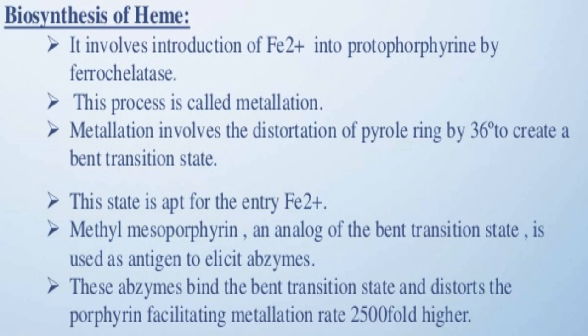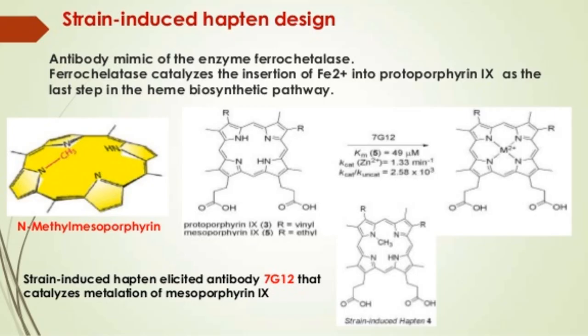Biosynthesis of heme involves the introduction of a ferric ion into protoporphyrin by ferrochelatase. This process is called metalation. Metalation involves the distortion of the porphyrin or pyrrole ring by 36 degrees to create a bent transition state, which is apt for the entry of the ferric ion. Methyl mesoporphyrin, an analog of the bent transition state, is used as an antigen to elicit abzymes. These abzymes bind to the bent transition state and distort the porphyrin, facilitating metalation at a rate 2500-fold higher. This process is also called strain-induced hapten design.